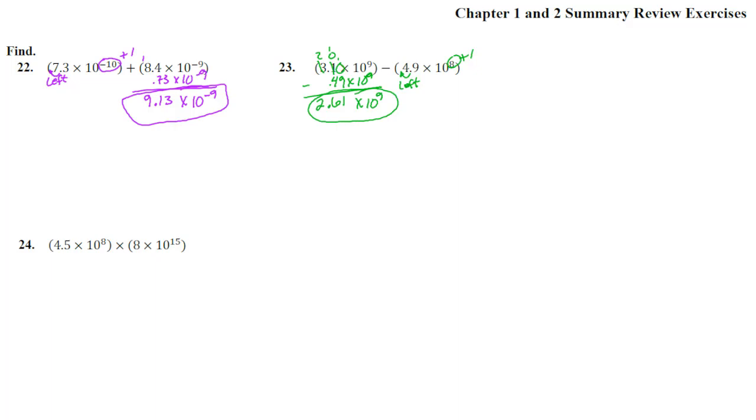Okay, number 24. Now we're multiplying. We don't need to get like things when we're multiplying. We just actually times them. So we have 4.5 times 10 to the 8th times 8 times 10 to the 15th. Now we're going to multiply these decimals and then we'll add the exponents.